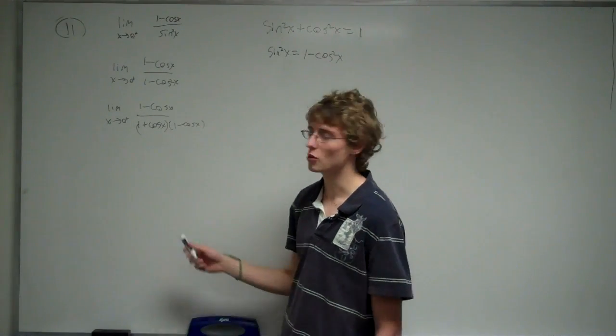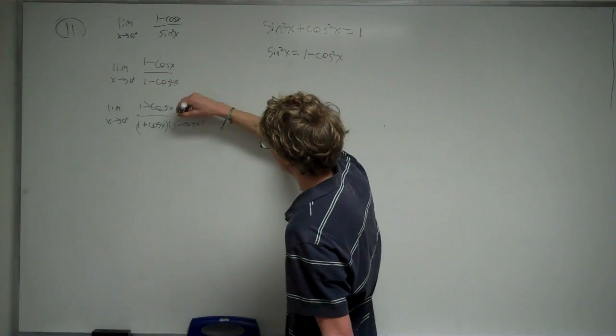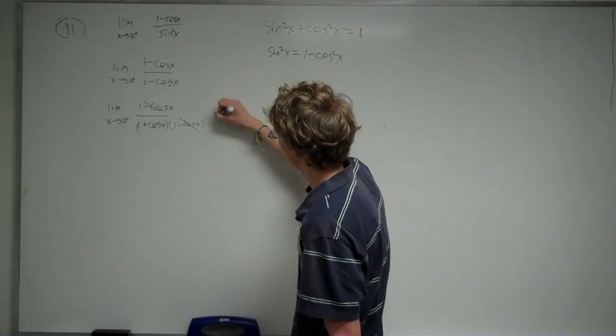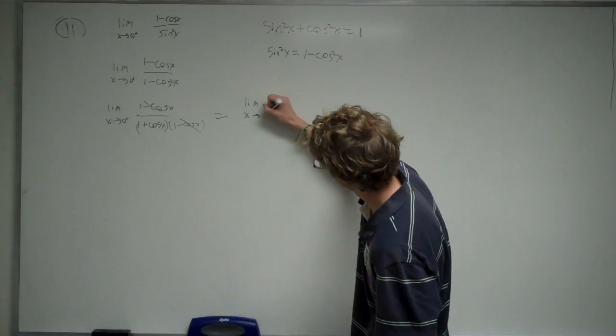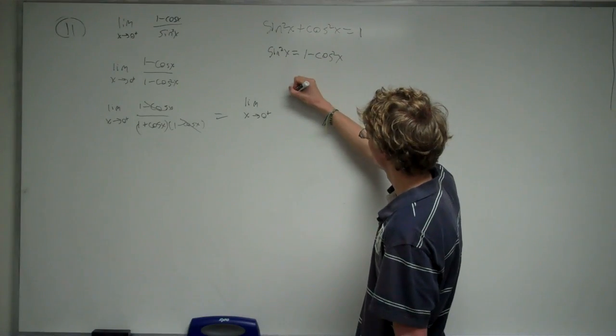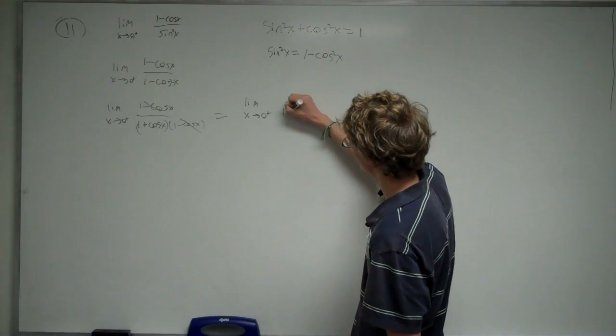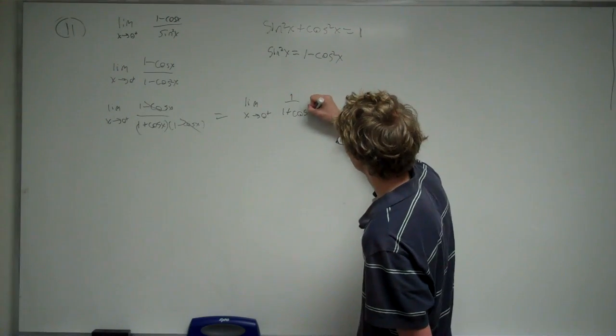Now, from here you notice that the 1 minus cosine of x cancel, and we're left with 1 over 1 plus cosine of x.